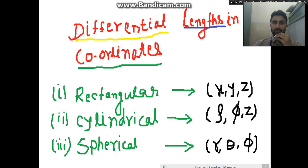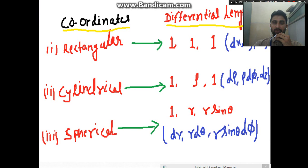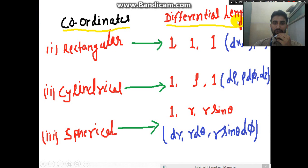By understanding these coordinates, we need to know the differential length of all three systems. Starting with the rectangular or Cartesian coordinate system — this is the simplest and there's a trick to understand all coordinate systems. I've mentioned all three coordinates and their corresponding differential lengths. For the rectangular coordinate system, the multiplication factors are 1, 1, 1 — meaning x, y, z become dx, dy, and dz.